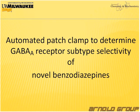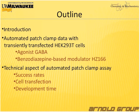We developed an assay to determine the GABA-A receptor subtype selectivity in order to determine this for new benzodiazepines, which were developed by our collaborator. The outline for today: I wanted to give a short introduction, and then the first part of my talk will be about the automated patch clamp assay. We are using transient transfected HEK293 T-cells, and we are investigating an agonist GABA and the positive modulator HZ166.